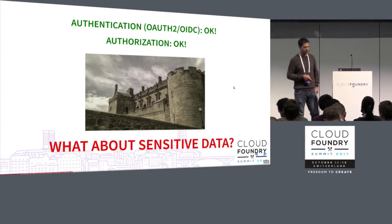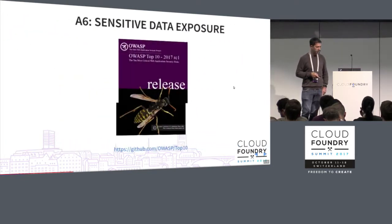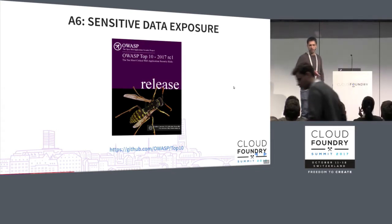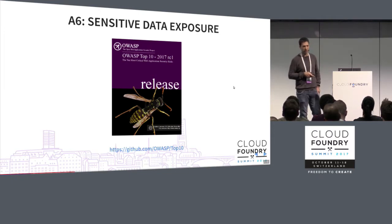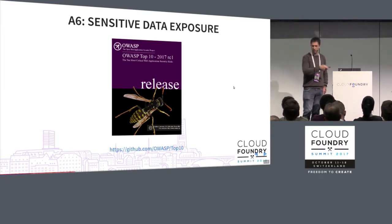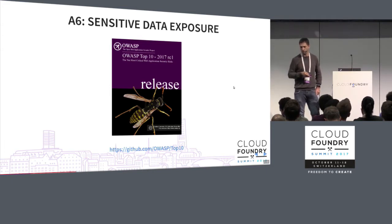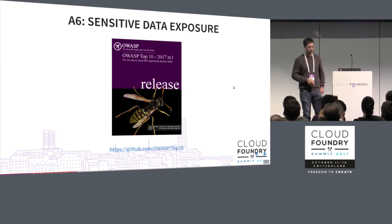But what about our sensitive data? That's sometimes a weak point in our applications, also recognized by OWASP — the Open Web Application Security Project. Who knows the OWASP Top 10 already? Towards the end of the year we can expect a new version; they declined release candidate one and are reworking it completely. But point A6, sensitive data exposure, is still in the current one.